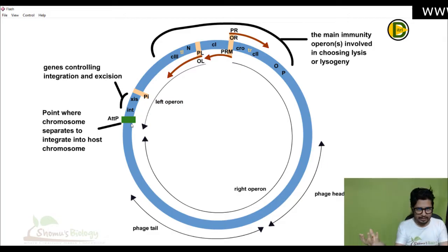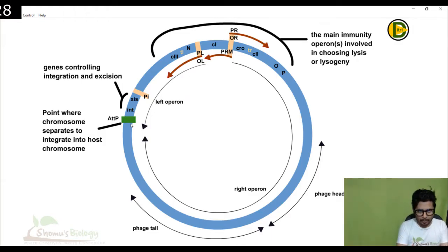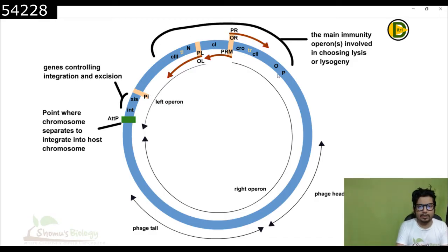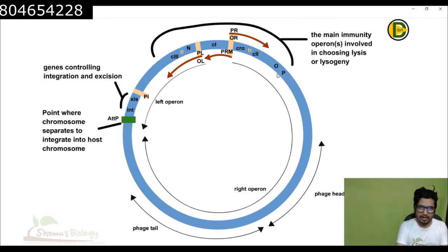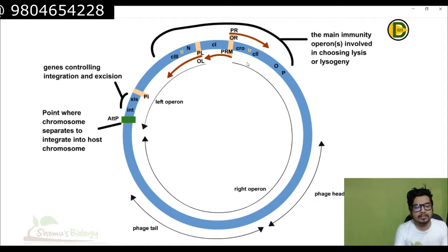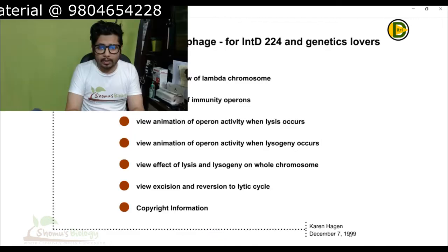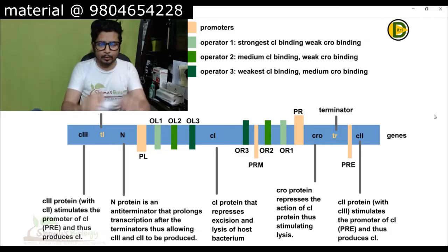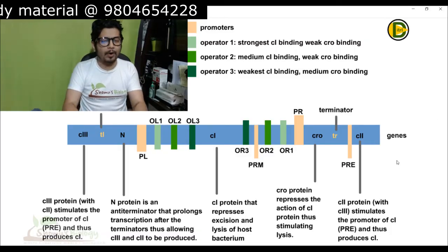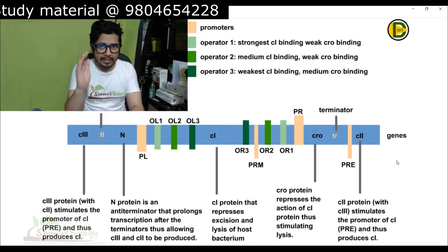Once the lysogenic-to-lytic switch is done, the attP site is also where the phage DNA gets separated from the bacterial DNA. In the top section you can see a complete list of the main operon involved in the lytic or lysogenic cycle. There are multiple proteins involved, and we'll zoom in to see how exactly all these different structures look — this is a close-up view of all the important genes and protein factors involved in the lytic/lysogenic switch.